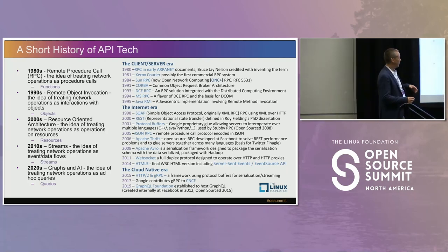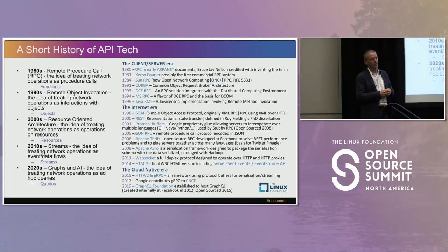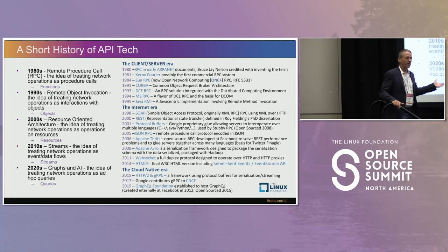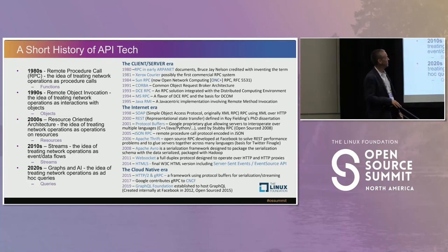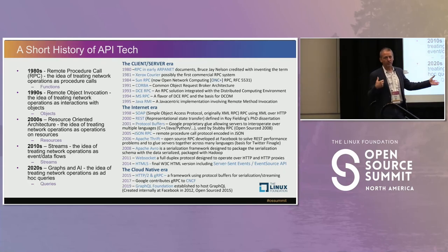Short history of API tech. There are a lot of different API initiatives that have happened over the years. We still use RPC today, and it was probably one of the first API technologies ever conceived. In 1980, Bruce J. Nelson coined that term in early ARPANET. Xerox came out with a commercial product shortly thereafter, and then SunRPC — created in 1984 — we are still using that today. If you have any kind of NFS going on, SunRPC is under the covers.